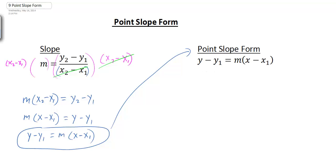In the point-slope form, m represents slope, and (x1, y1) represents a point on the line. So we can easily identify the slope and the point. This equation is very useful — for example, if you are given a point on a line and the slope, we could simply find the equation for the line.